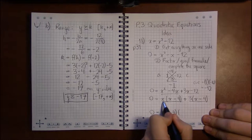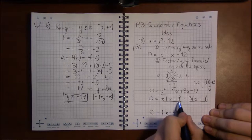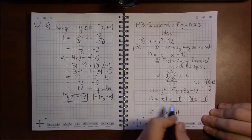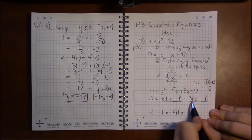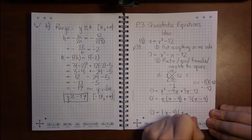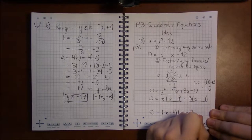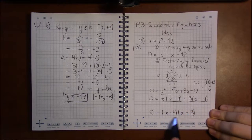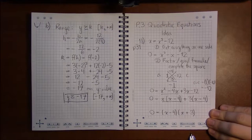I'm left with: pulling x minus 4 out of here leaves me with an x, pulling x minus 4 out of the second term, all I'm left with is the 3. We've just factored this quadratic.